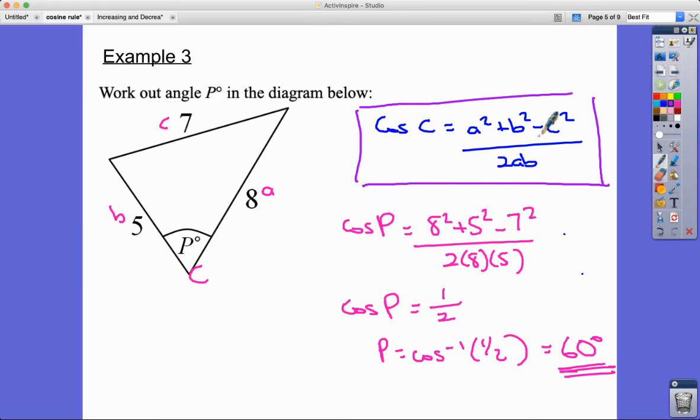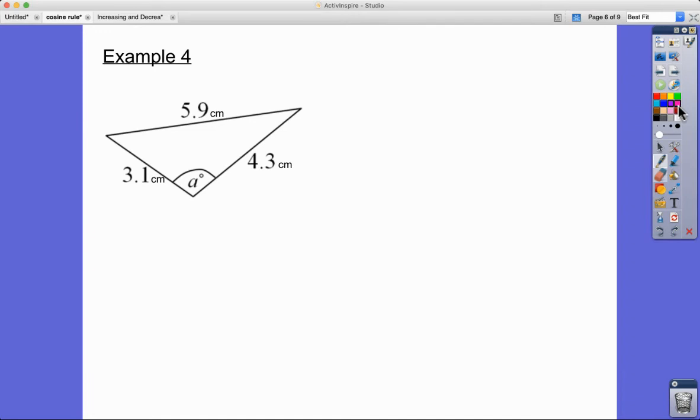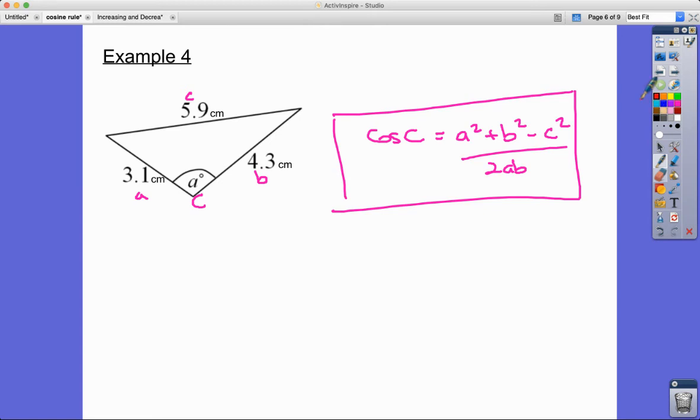Last one, example four. This time we're trying to find this angle here. Let's call it c, opposite side c. We've got sides a and b on either side of it. Same thing again: cos C = (a² + b² - c²) / 2ab. It's the case of plugging values into this, so we get cos a = (3.1² + 4.3² - 5.9²) / (2 × 3.1 × 4.3).